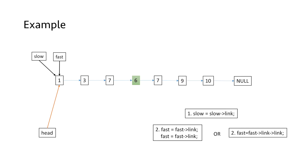Instead of writing the statement twice, we can compact it and write: fast = link of link of fast, which will increment our fast pointer by two nodes. By increment I mean that the fast pointer will move at a pace of two nodes.